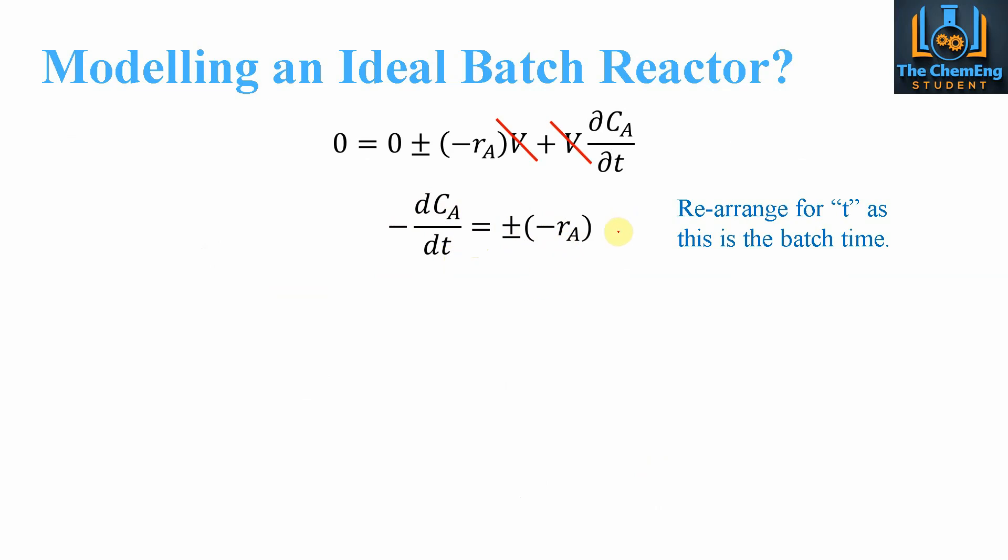If we rearrange, we get dt equals -dC over -rA. If we integrate, we get t equals the integral of -dC over -rA.